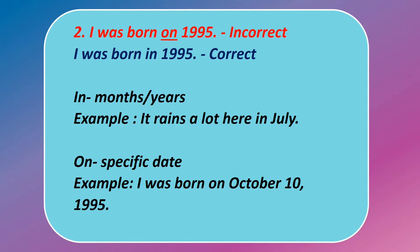The correct answer is 'I was born in 1995' because we say 'in' with months and years. For example, it rains a lot here in July. But if you mention a specific date, then use 'on.' For example, I was born on October 10, 1995.